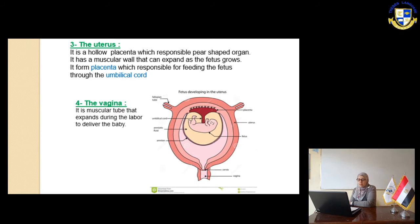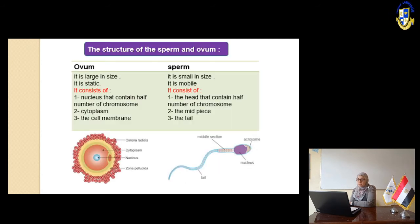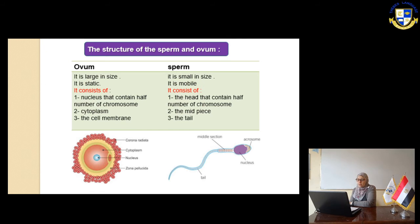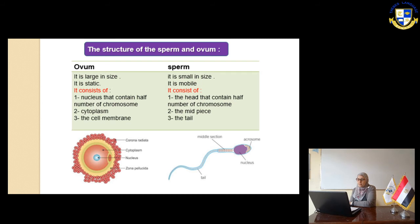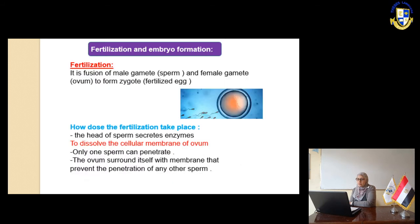Slide number 11. Here we can see a comparison between the ovum and the sperm. The sperm is small in size while the ovum is large in size. The sperm is mobile while the ovum is static. The sperm consists of a tail, middle piece, and head. The head contains half the number of chromosomes. The ovum consists of a cell membrane, cytoplasm, and nucleus, and the nucleus also contains half the number of chromosomes.